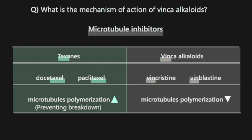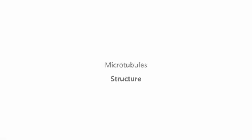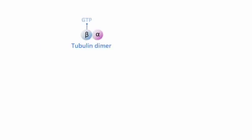Let's examine the structure of microtubules. Microtubules are composed of alpha and beta tubulin subunits. GTP bound to beta tubulin can be hydrolyzed when GTP tubulin is added to the microtubule lattice, playing a crucial role in microtubule dynamic instability.